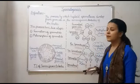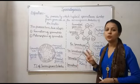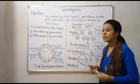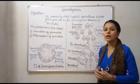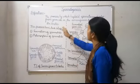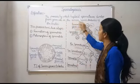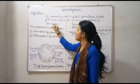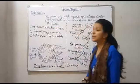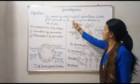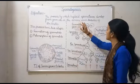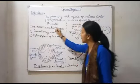हम लोग सबसे पहले इसकी definition देखते हैं। Definition में दो चीज़ें focus करनी है: number one, spermatogenesis की formation कहाँ हो रही है और किसके through हो रही है। Definition के अंदर: 'The process by which haploid spermatozoa develop from germ cells in the seminiferous tubules of the testis.' Formation हो रहा है haploid spermatozoa का, और इनका development हो रहा है testis के अंदर।